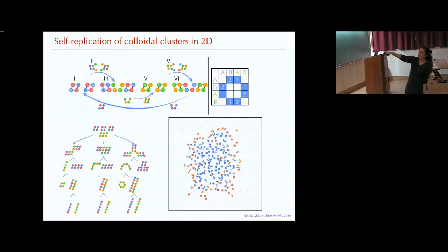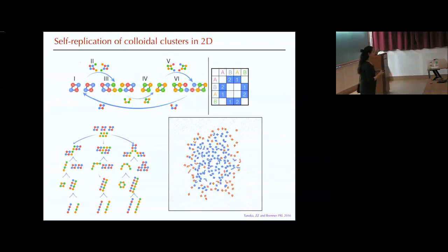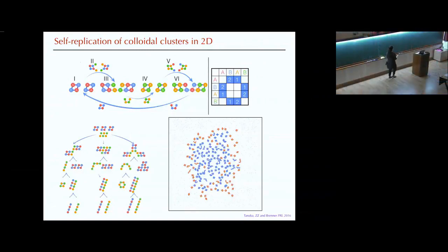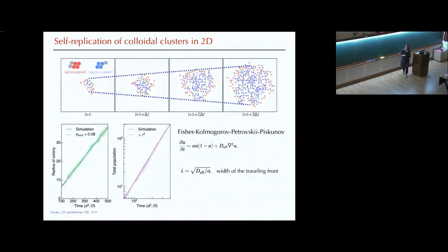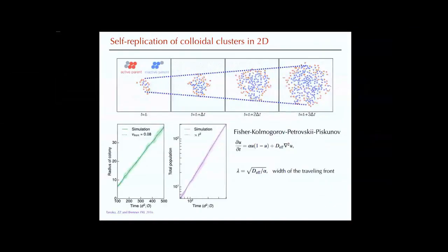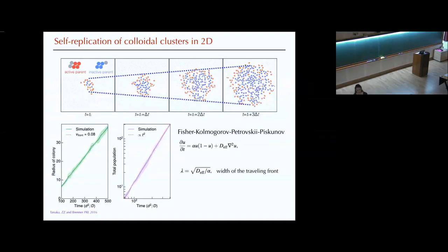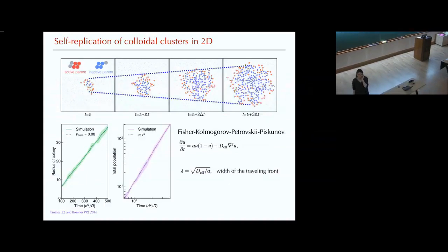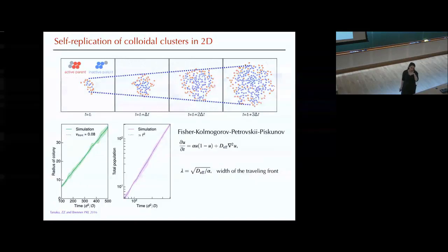What you end up with is something we've seen in Claudia's talk — a bunch of blue inactive things in the center, and then red things at the boundary. We need them to be able to separate and give them some timescale. There are different ways to realize it in simulations, but ultimately we just need to separate them at some point — we give them some timescale and then it separates.